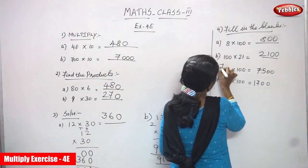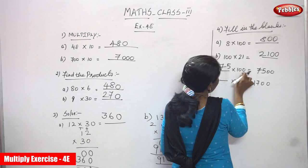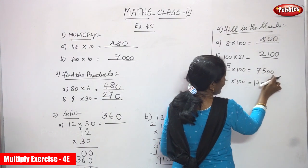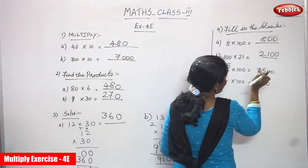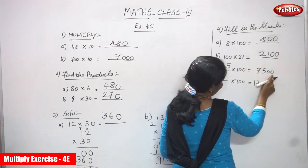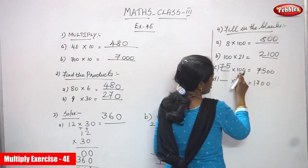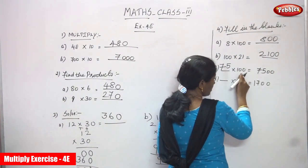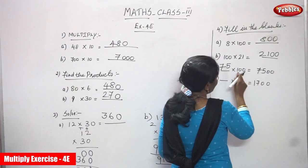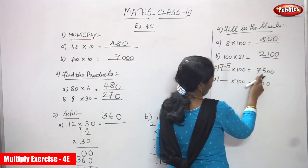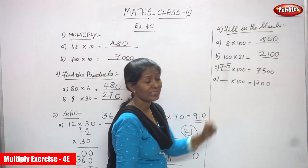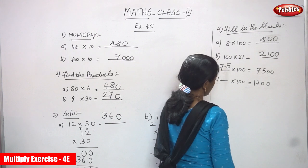Next: blank into 100 equals 7500. 7500 has double zeros — that is two zeros at the end. So the number multiplied by 100 must be 75. Write 75 in the blank. 75 into 100 gives 7500. The remaining number: 1 into 75 is 75. So 75 is the right answer.